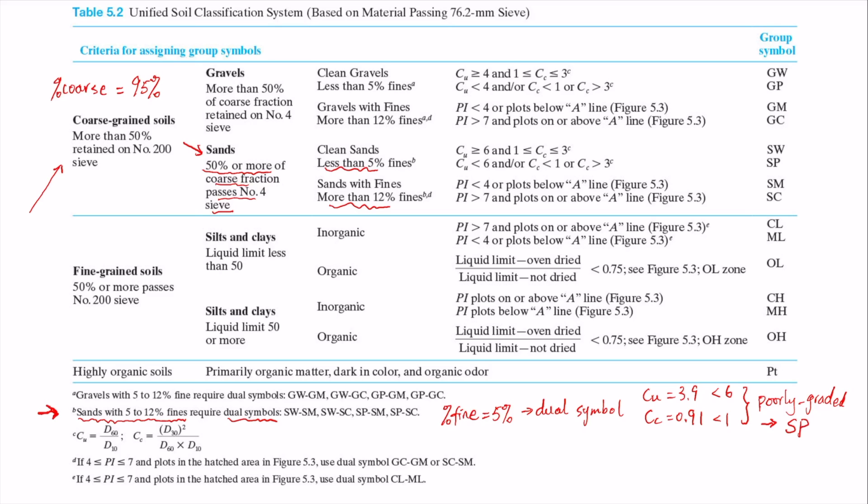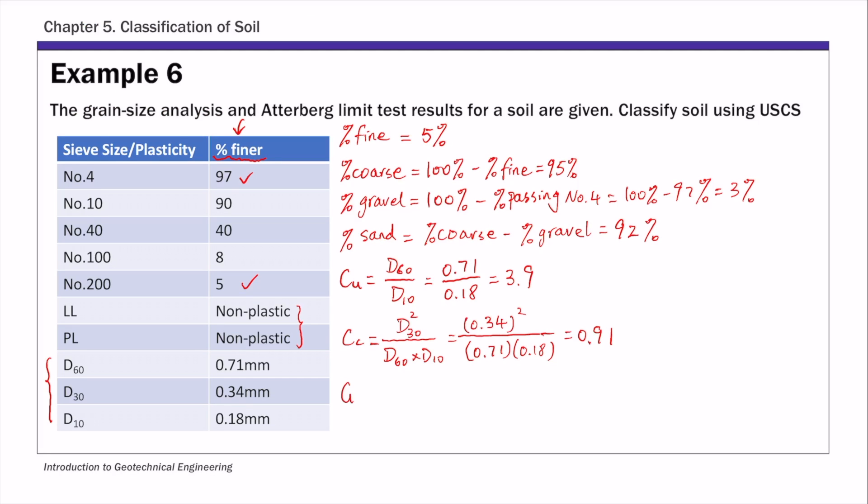And then the second portion of the dual symbol relates to the plastic or the fine contents. And because it's non-plastic, we know the fine contents are silts. So this gives us the second portion of the dual symbol SM. So this is part one of the dual symbol and this is part two of the dual symbol. Combining these two gives us the complete group symbol. So for this soil, the group symbol is SP-SM.